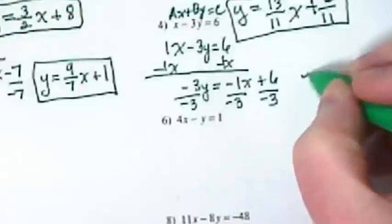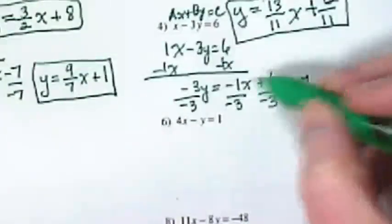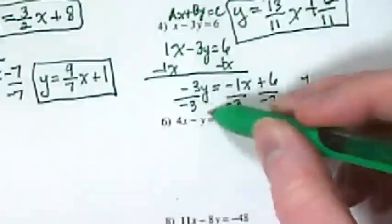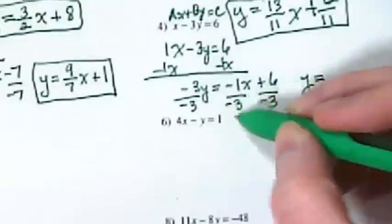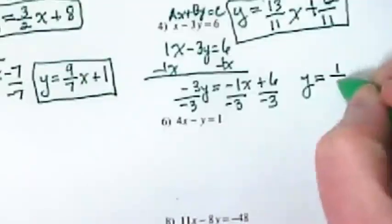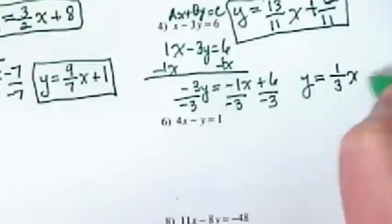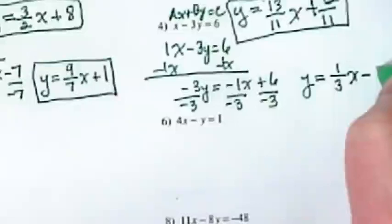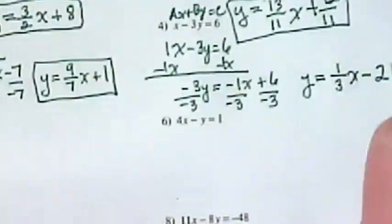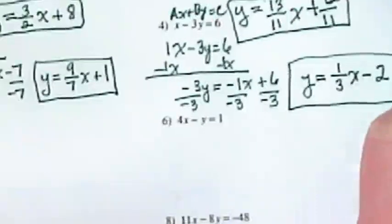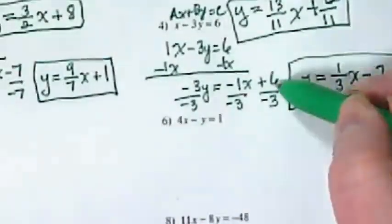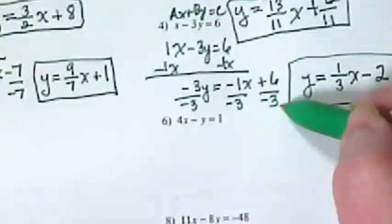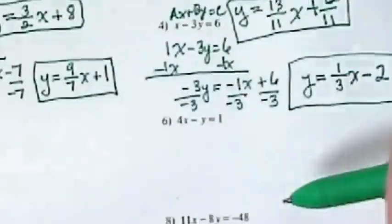I'm going to rewrite it over here. Negative 3 over negative 3Y leaves us with just Y. Negative 1 over negative 3 becomes 1 over 3X minus 2. Where did I get the minus 2? Positive 6 divided by negative 3.